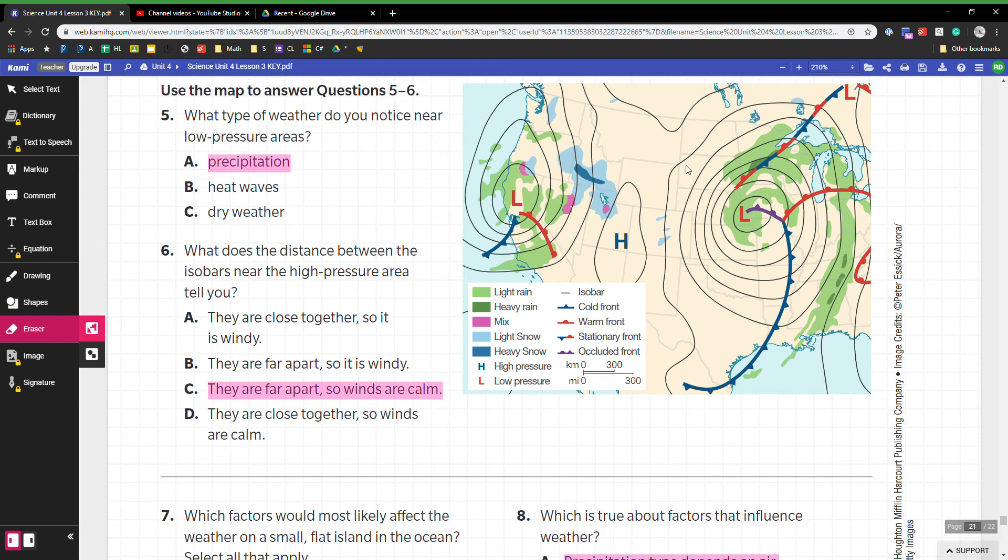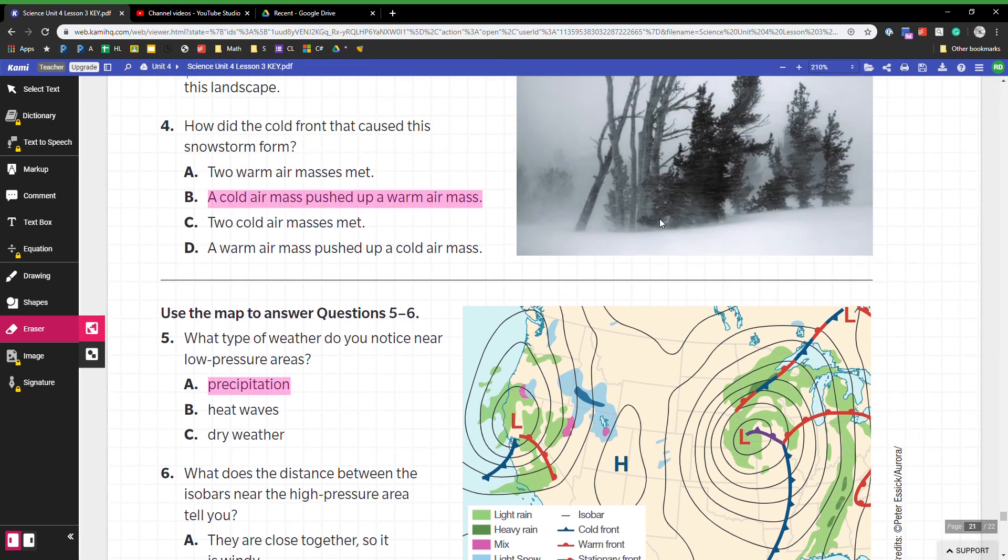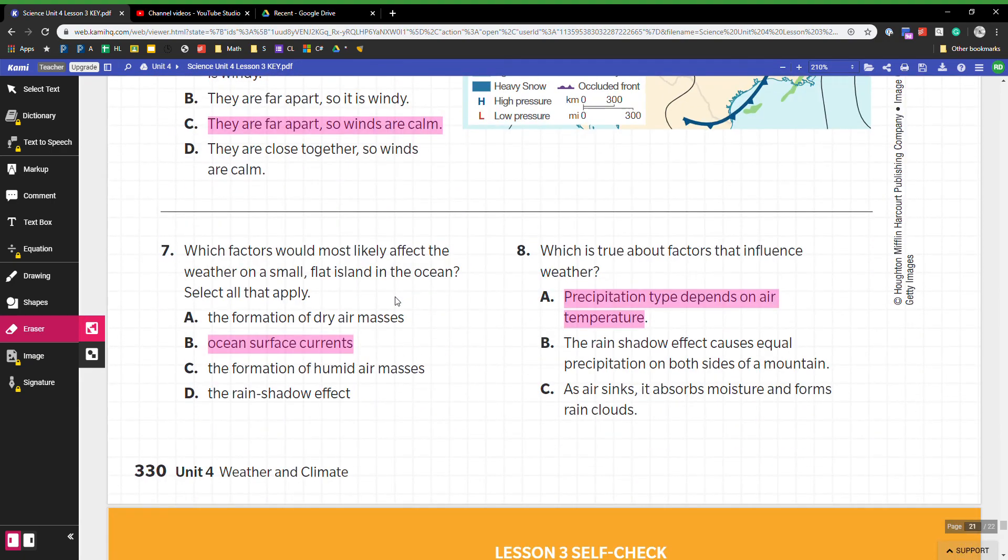Then you get to the high pressure system and they're more spread out, there's a lot more space. That means that the wind is calmer. It's really measuring pressure differences. Here this is lots of pressure difference, lots of pressure difference, not a lot of pressure difference. And as we know from here, the pressure differences will cause wind. Most likely the ocean surface currents would affect the weather on a small island because the surface currents would affect the weather.